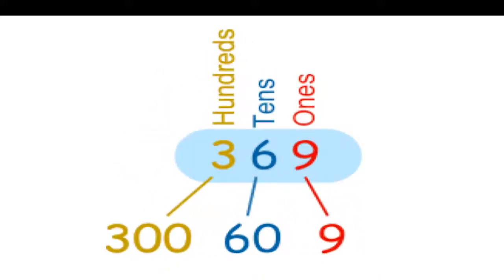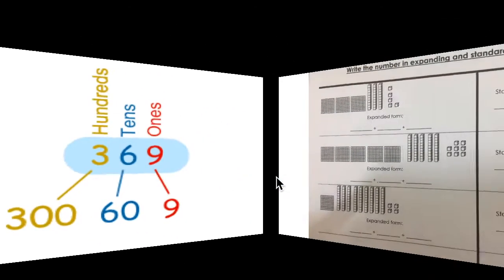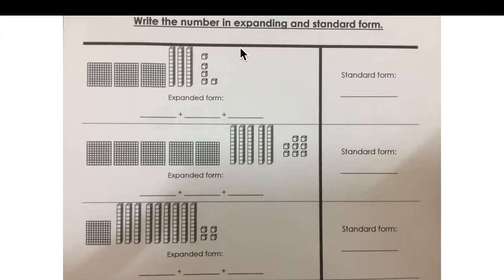Now you can practice. Do not forget: to make the expanded form, you need to add hundreds, tens, and ones separately. To make the standard form, take the first digits from hundreds, tens, and ones, put them together and you get the standard form. Count the blocks and write the expanded form, then write the standard form. You have the worksheet and can do everything by yourself.